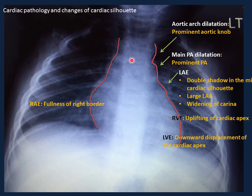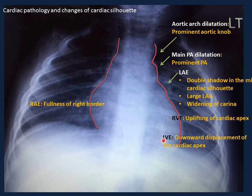Additional signs of left atrial enlargement include widening of the carina to more than 90 degrees and the double density sign on cardiac silhouette. Examples include congenital VSD or acquired mitral stenosis. Right ventricular enlargement causes the cardiac apex to be uplifted upward, while left ventricular enlargement displaces the apex downward. Right atrial enlargement shows as fullness of the right side — classic example is Ebstein's anomaly. Note that severe cardiomegaly in infants makes it very difficult to specify which chamber is enlarged.